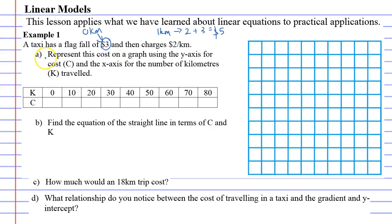Question A asks us to represent this cost on a graph using the y-axis for the cost C and x-axis for the number of kilometers traveled. We're going to start by filling in this table. K represents the kilometers traveled by the taxi, C is the cost. We mentioned before that it costs $3 to travel 0 kilometers.